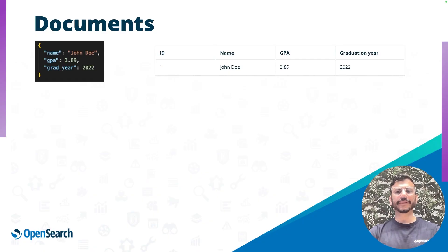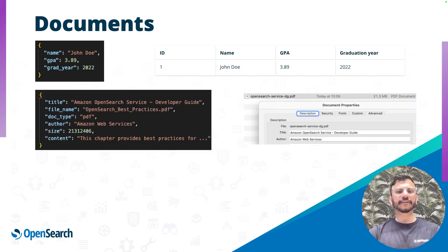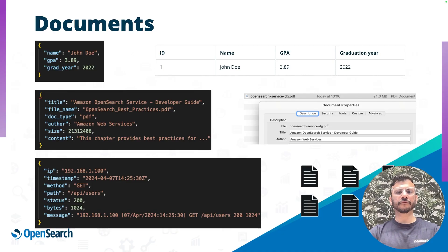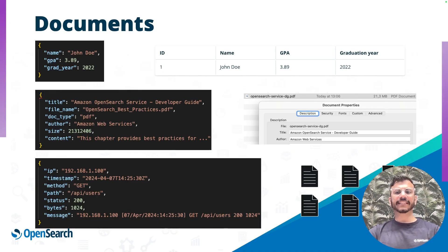Let's start with what a document is. A row in a table can be an OpenSearch document. A file in a file system can be an OpenSearch document. A log line from a log file can be an OpenSearch document. A document in OpenSearch is the most granular unit of the index data. So when you run a search asking for information, OpenSearch returns relevant documents for your search. But you have the control to define what a document is in OpenSearch.